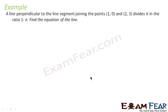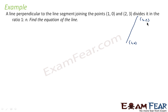The question says: a line perpendicular to the line segment joining points (1, 0) and (2, 3) divides it in ratio 1 to n. Find the equation of the line.